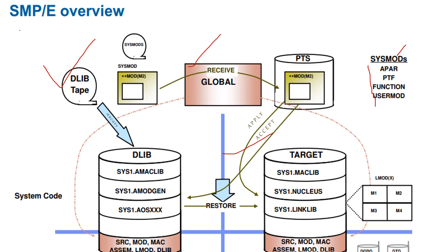SMP stands for System Modification Program Extended. SMP is a tool designed to manage the installation of software products on the z/OS system and to track modifications. The individual components in MVS — whether they can be assembled like macros, linked system code, JCL, or other elements — are all distributed to the customer in individual partitioned data sets, or libraries. All these are called the distribution library.